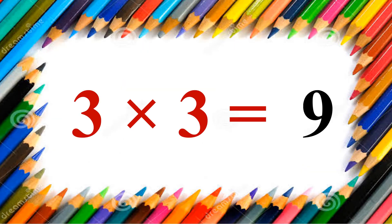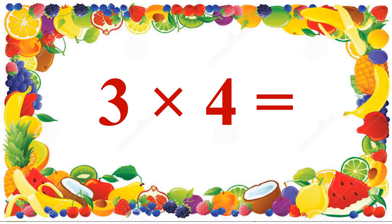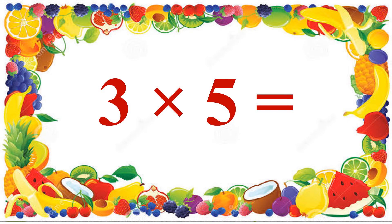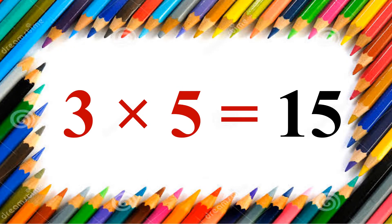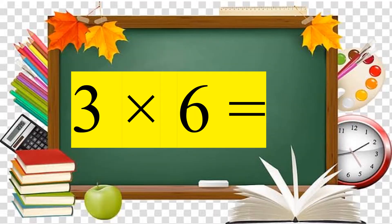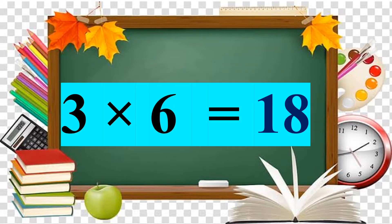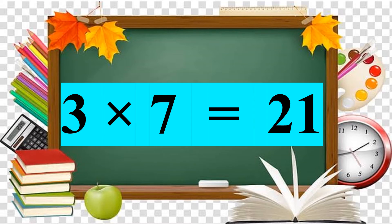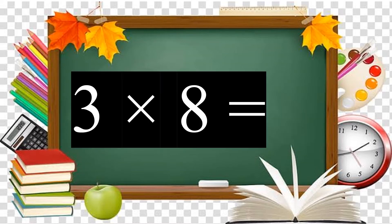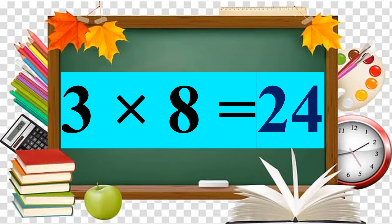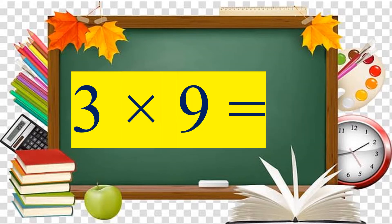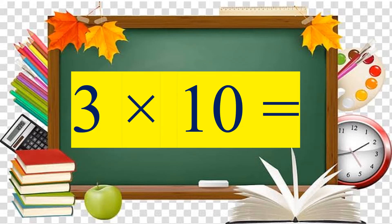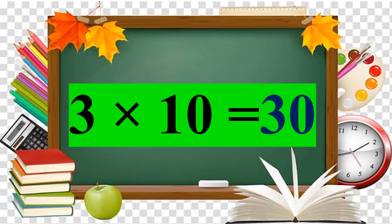3 threes are 9. 3 fours are 12. 3 fives are 15. 3 sixes are 18. 3 sevens are 21. 3 eights are 24. 3 nines are 27. 3 tens are 30.